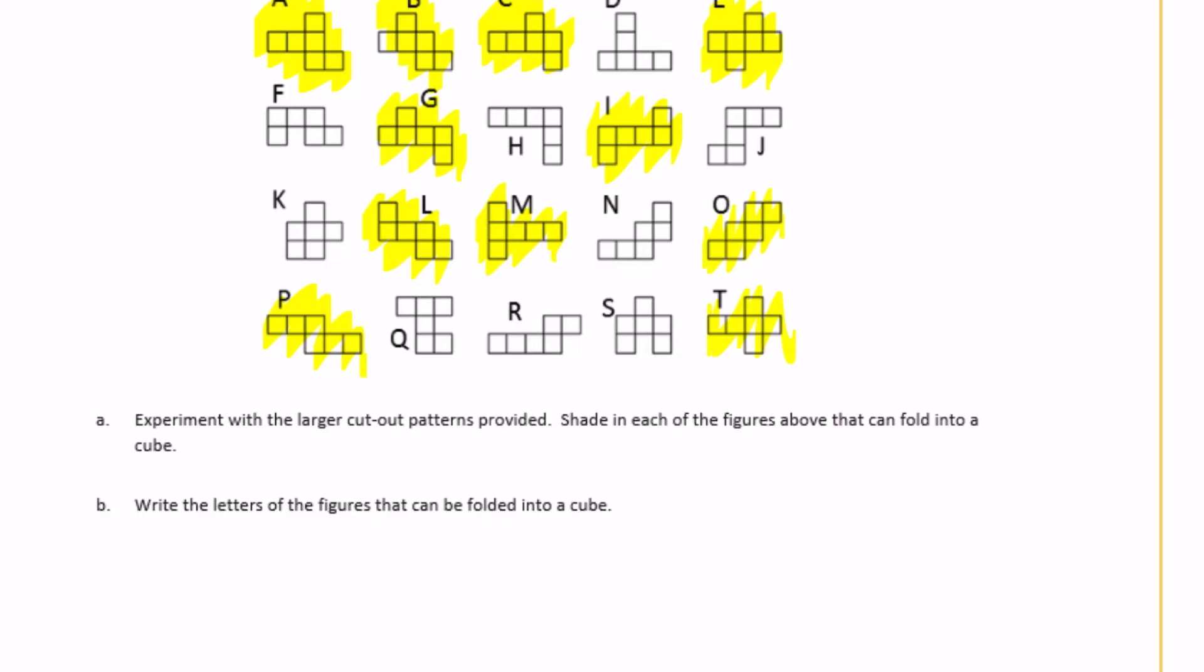Those are the ones that fold into cubes. The others do not. If we list the letters that can be folded into a cube, we have A, B, C, E, G, I, L, M, O, P, and T.